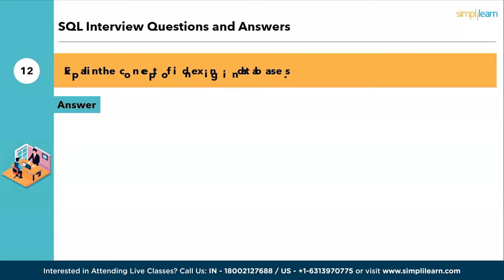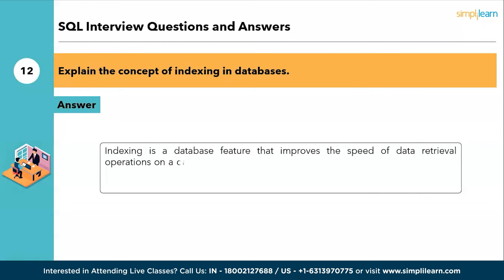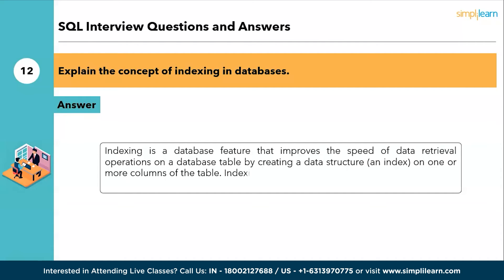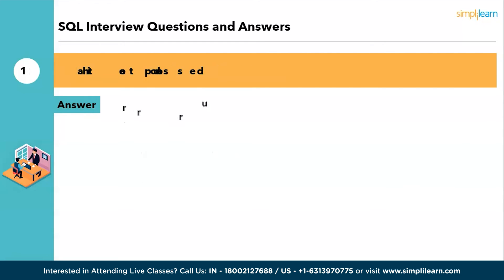The twelfth question: explain the concept of indexing in databases. Indexing is a database feature that improves the speed of data retrieval operations on a database table by creating a data structure, also known as an index, on one or more columns of the table. Indexing allows the database engine to quickly locate and access the rows that satisfy a query.